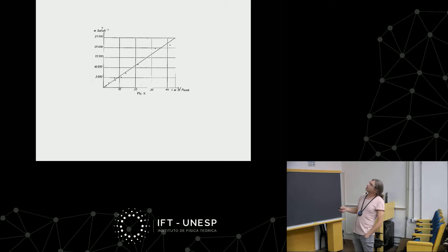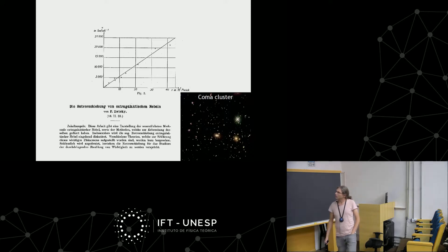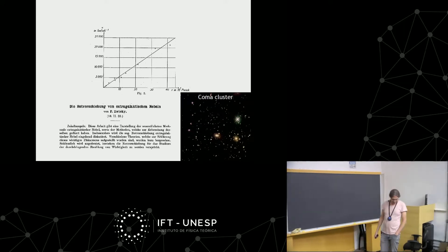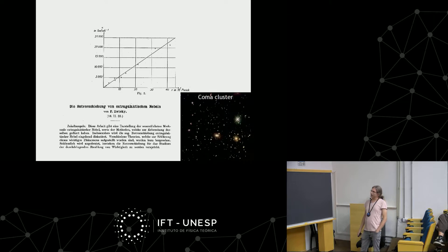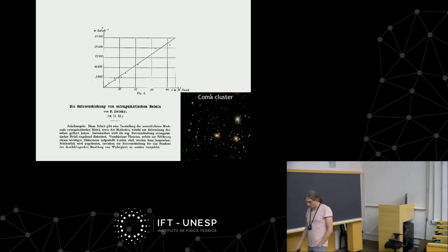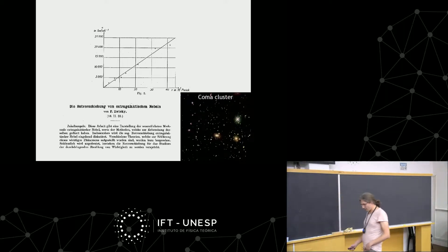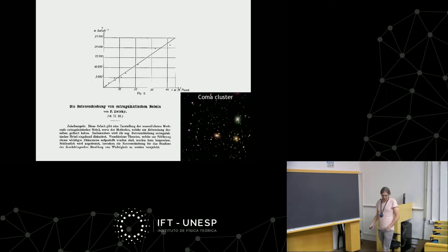Here in the vertical axis you can see velocity in units of kilometers per second. Here in the horizontal axis you have distance in units of megaparsec. Note that parsec and seconds are written with a 'k' because this is a plot taken from a paper from 1933 — 86 years ago — written by Fritz Zwicky, about the redshift from extragalactic nebulae.